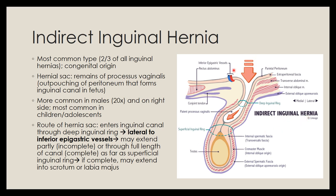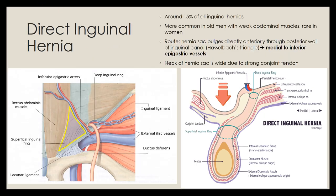In this diagram you can see the course of an indirect inguinal hernia. It has entered the inguinal canal lateral to the inferior epigastric vessels, passed the deep inguinal ring, and if it passes the superficial inguinal ring it can extend into the scrotum containing the testes. The sac of this hernia is formed by the patent processus vaginalis.